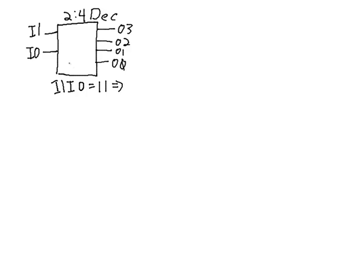And if I1 and I0 is equal to 1, 1, 1, 1 is the number 3. It's going to select output 3. It will equal 1. Then all the others will equal 0.